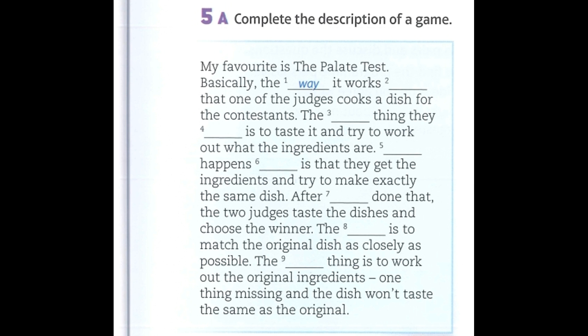Underscore happens, underscore is that they get the ingredients and try to make exactly the same dish. After underscore done that, the two judges taste the dishes and choose the winner. The underscore is to match the original dish as closely as possible.